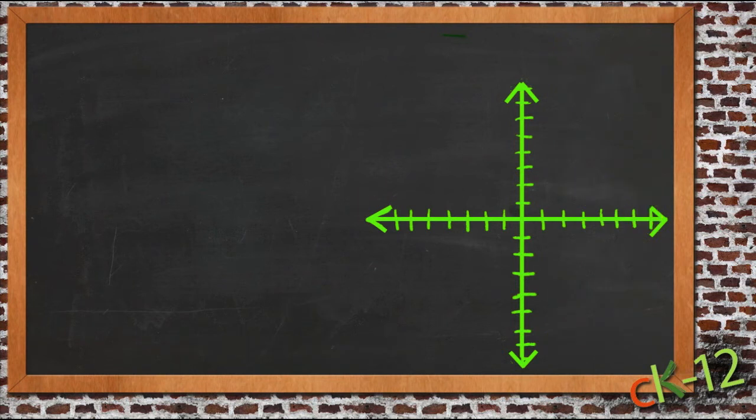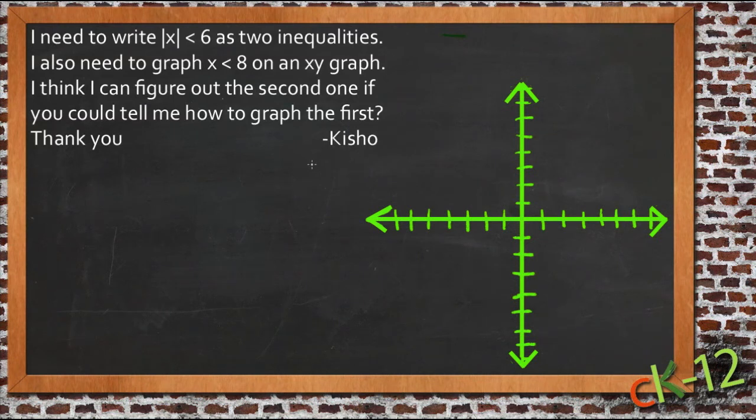So let's see how that applies to a question sent in by a student. Kisho here said that she needs to write the absolute value of x is less than six as two inequalities, and then she needs to graph x is less than eight on an xy-graph. She says she thinks she can figure out the second one if I can try to do the first. So first let's write the absolute value of x is less than six, and then we'll graph it and we'll leave the other one for her to graph.